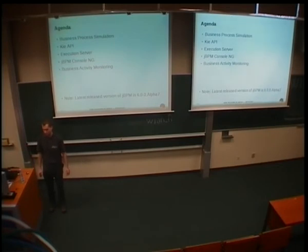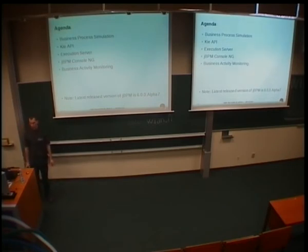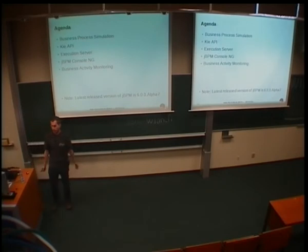The agenda of this presentation will be business process simulation, KIA API, which is a new programming interface for JBPM 6. Also, the new component, which is execution server, and JBPM console engine, the tool for starting business processes, monitoring them, and human task management. And the last one is the addition of the Polymeta, so Red Hat acquired Polymeta company last year, and business activity monitoring is the new module which is able to analyze data of the execution of the business processes.